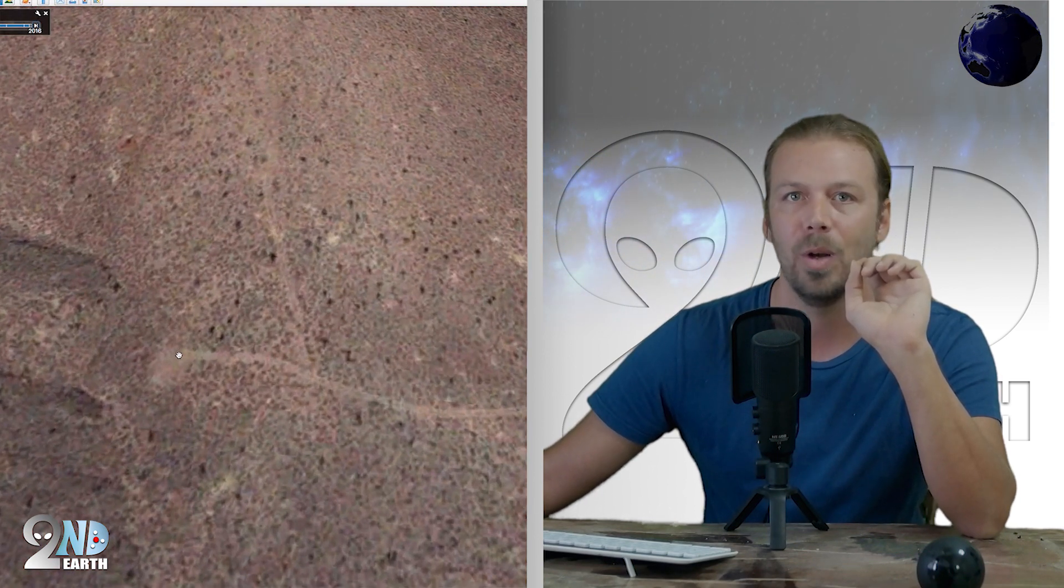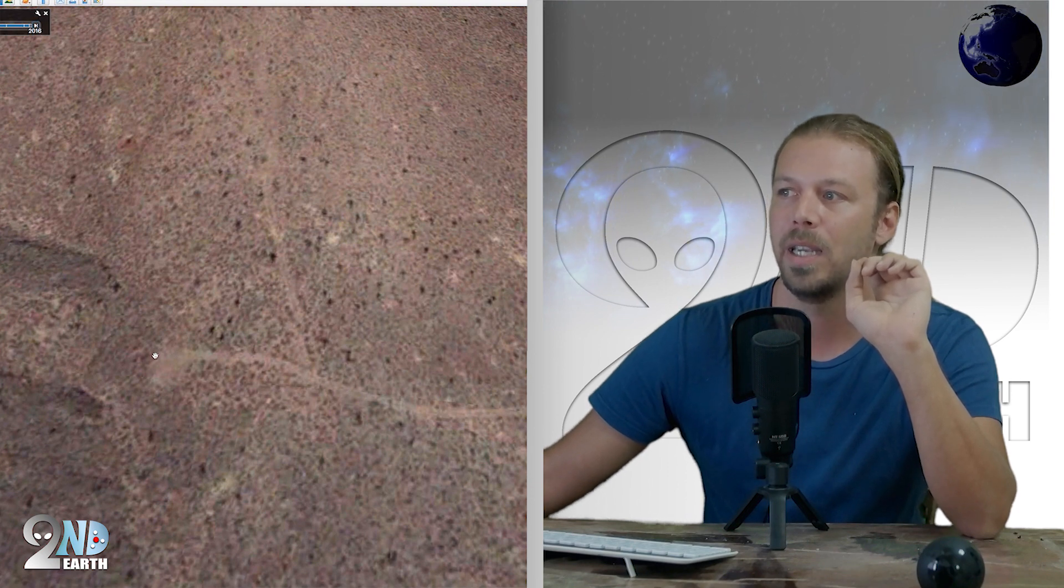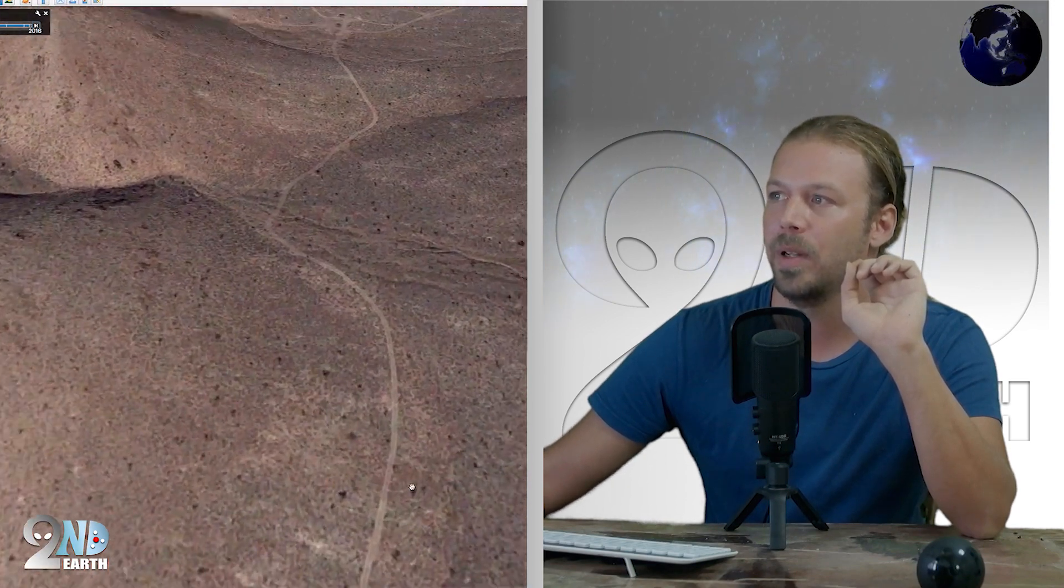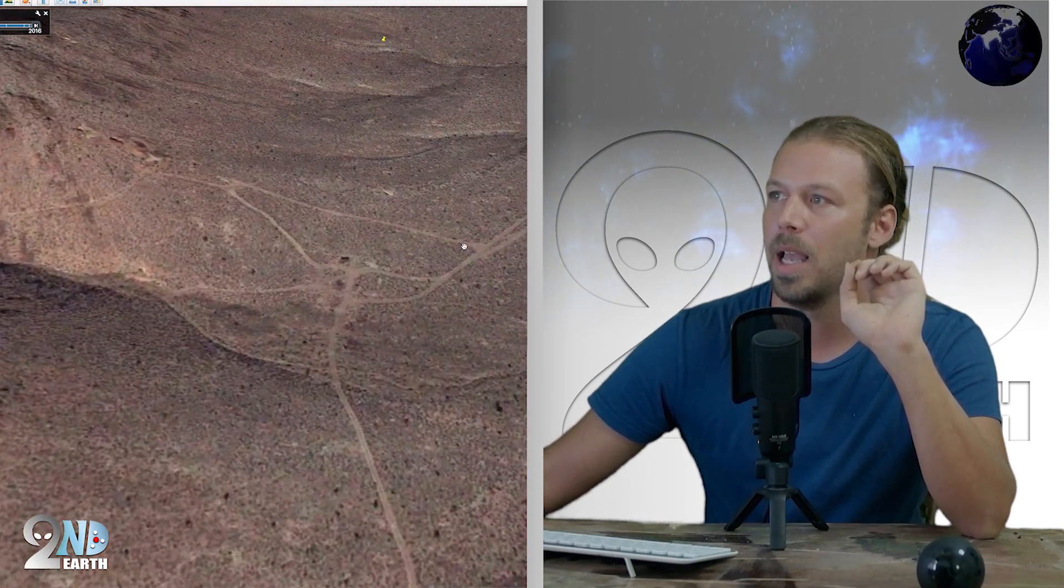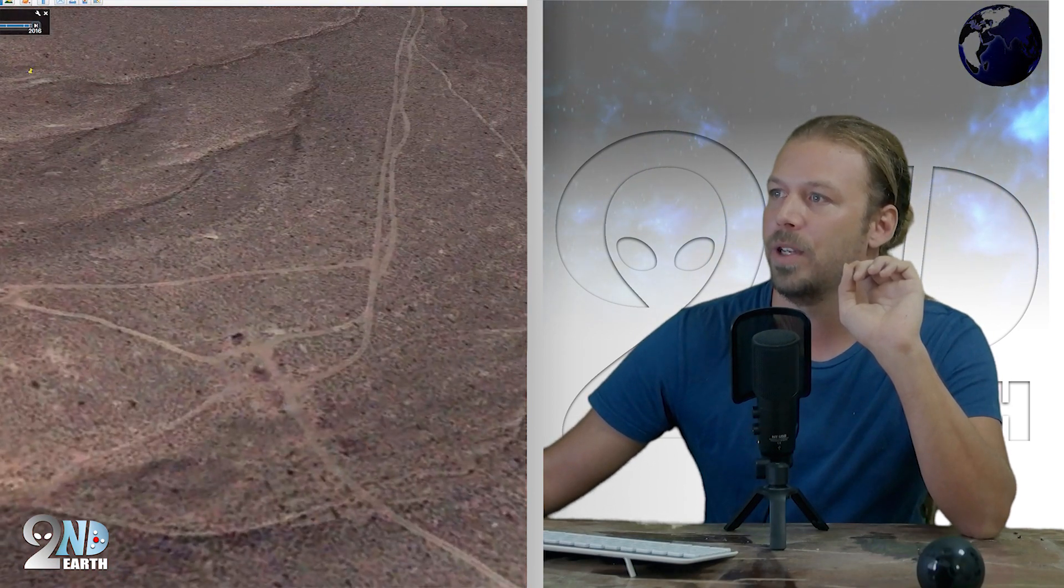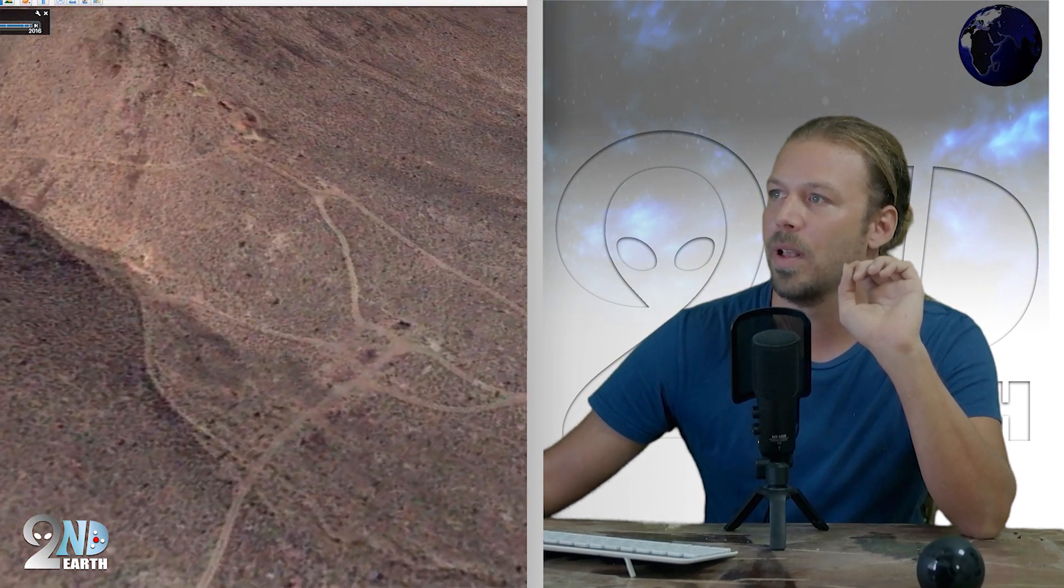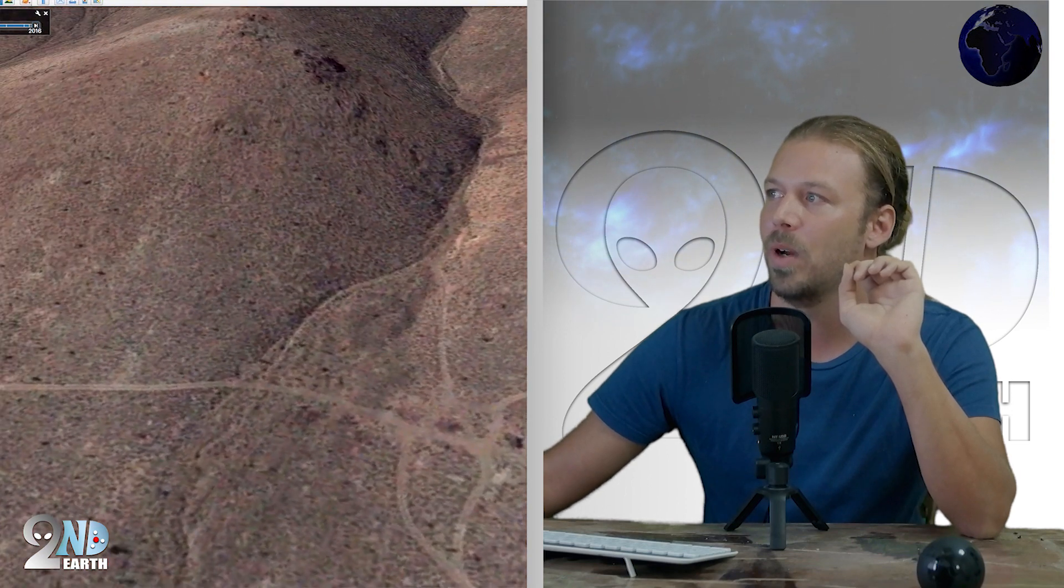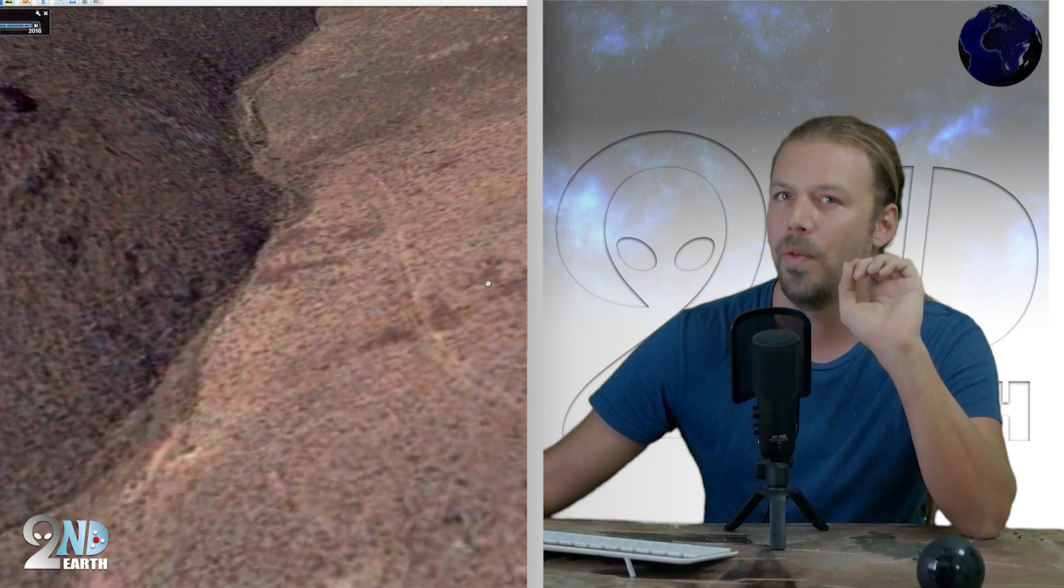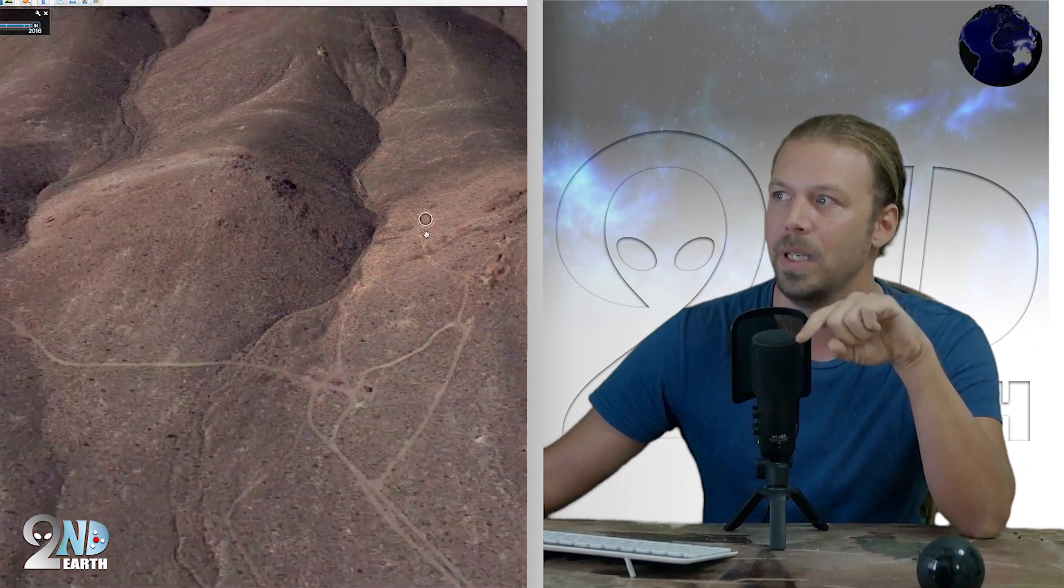The tire tracks slither back into the mountains. This little region right here is probably a security checkpoint. It's something that I've seen all over Area 51 where the security kind of chills out with their pickup trucks there. So let's just keep following this road, and look what happens here.